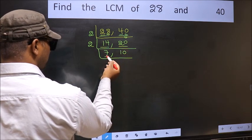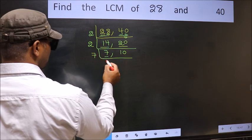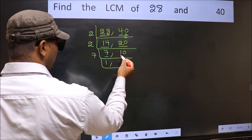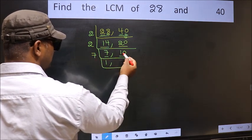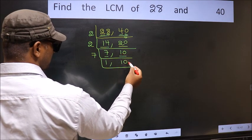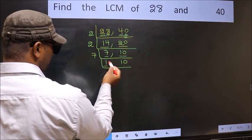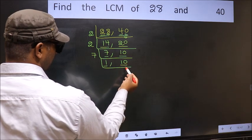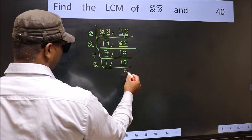Now we have 7. Since 7 is a prime number, 7 times 1 is 7, so 7 divided by 7 gives 1. The other number 10 is not divisible by 7, so we write it down as it is. Now focus on 10: 2 times 5 is 10, so 10 divided by 2 gives 5.